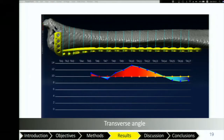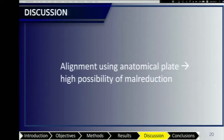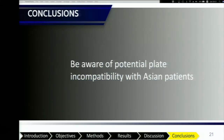Similarly, a transverse angle greater than 10 degrees can cause malrotation. In the Asian population, using the anatomical plate to guide fracture reduction, there is a high possibility of malrotation. Our conclusion is that surgeons operating on members of the Asian population should be aware of the potential for incompatibility with all plate lengths.